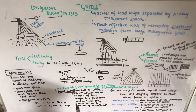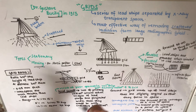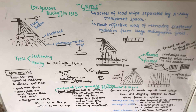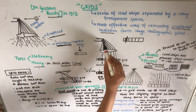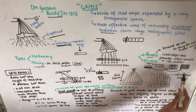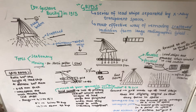The linear type of grid can only be used effectively with very small x-ray fields or when the target-to-grid distance is long. The cross grid is made up of two superimposed linear grids at right angles to each other with the same focusing distance. The disadvantage of the cross grid is that it cannot be used with oblique techniques that require angulation of the x-ray tube.